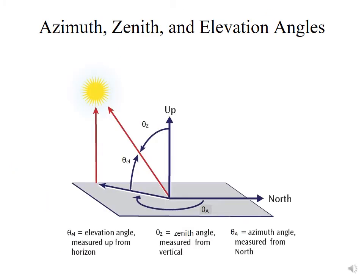When we start talking about radiation later in the class, it's going to be really important that we understand the direction of the sun relative to an observer on the surface. We have several different ways to define that angle. The first is the elevation angle — theta EL — which is basically the angle from the horizon to the sun.